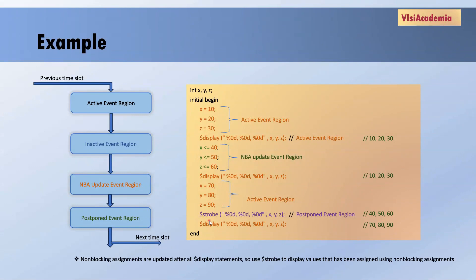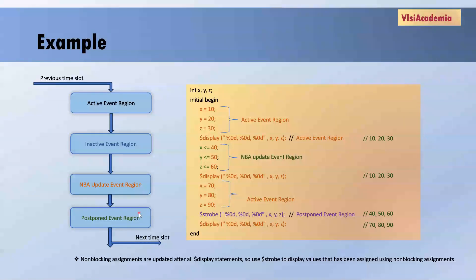One important point to notice: even though $display is written after the NBA assignment, $display was only showing values from blocking assignments. To display values updated by non-blocking assignments, we should use $strobe, since $strobe will always be executed after non-blocking assignments are updated. That is why we generally use $display to show values assigned through blocking assignments, and $strobe to display values assigned using non-blocking assignments.